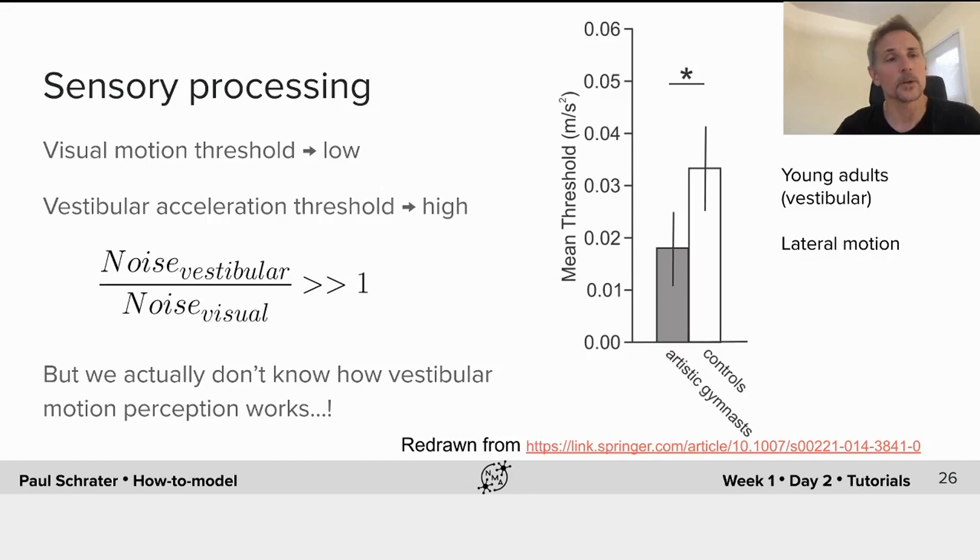In general, there is a big difference, order of magnitude difference, in reliability between a visual signal and a vestibular signal.